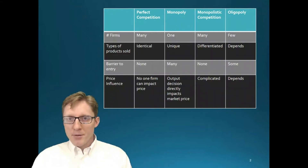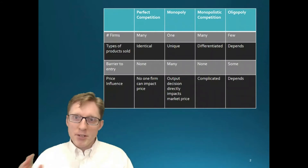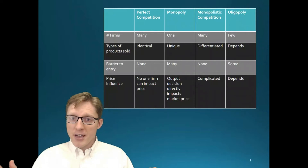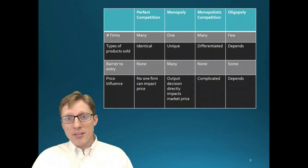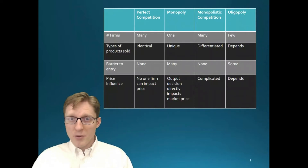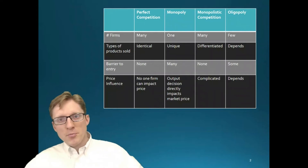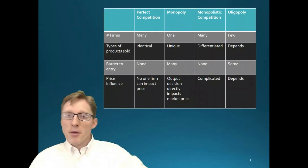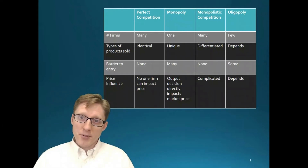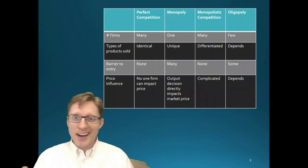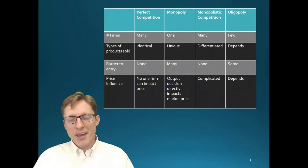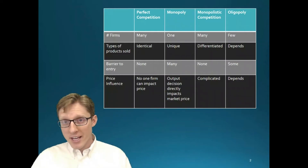Later we're going to look at monopolistic competition, which is sort of halfway in between. We'll assume there aren't any barriers to entry, but rather than the product being unique, there will be differentiated products — one firm's product is a partial substitute for another firm's product, but they're not exactly the same. And in a later lecture, we'll look at oligopoly markets.